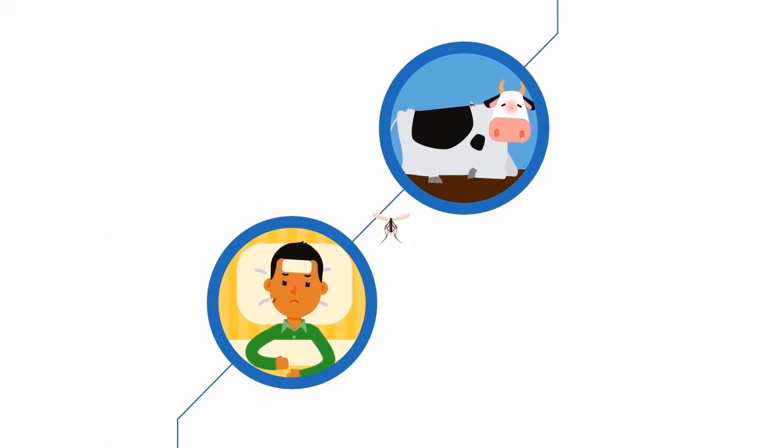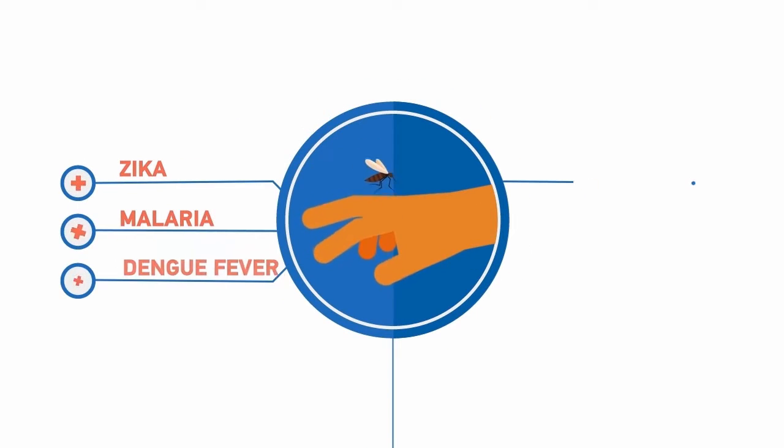Diseases spread when the female mosquito bites an infected person or animal and transfers the disease to another person it bites.